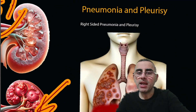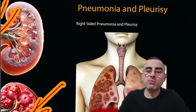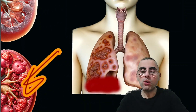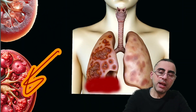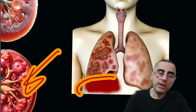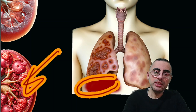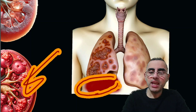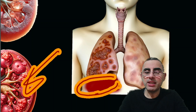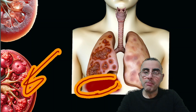Pneumonia and pleurisy can also cause right upper abdominal pain, particularly right-sided pneumonia or pleurisy. In these cases, you can easily distinguish it from other types of pain because the pain increases during breathing.